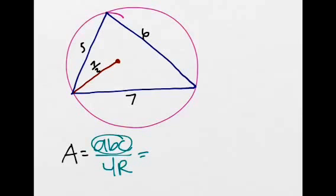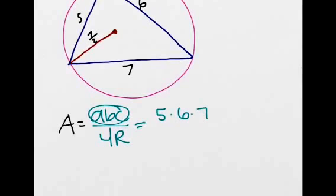So A times B times C is just equal to 5 times 6 times 7, and then 4R is just 4 times 7.5. Simplifying this,